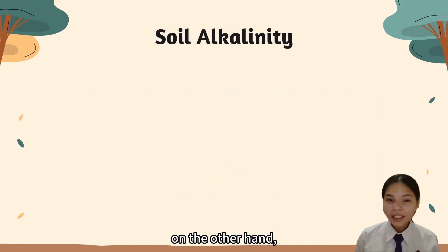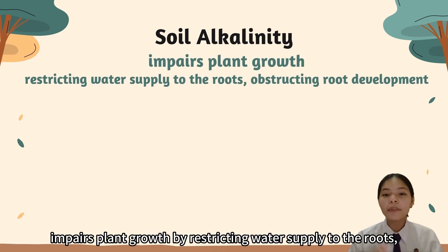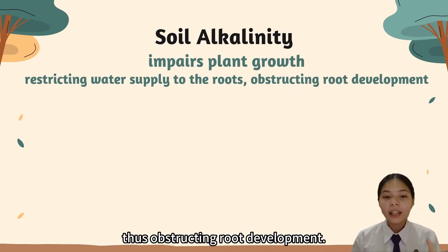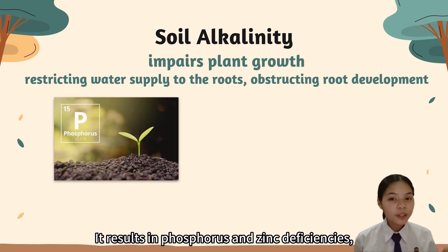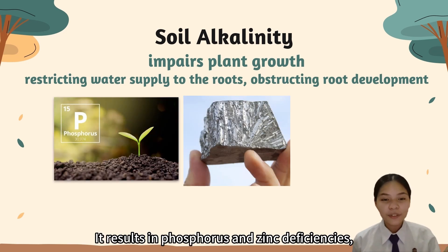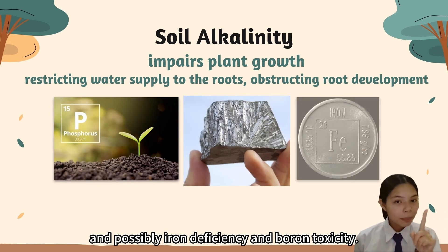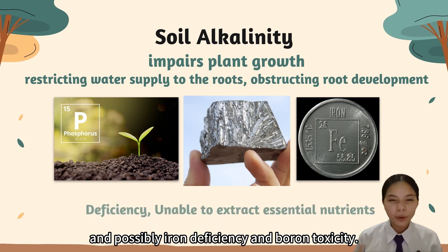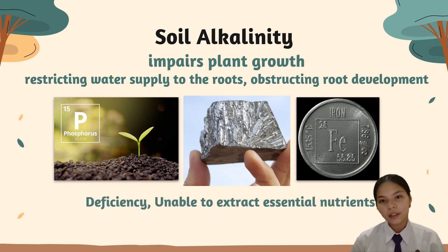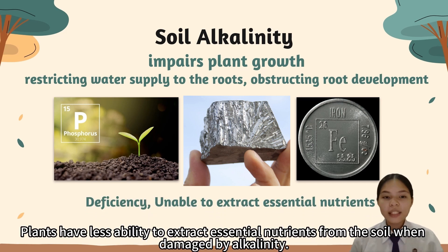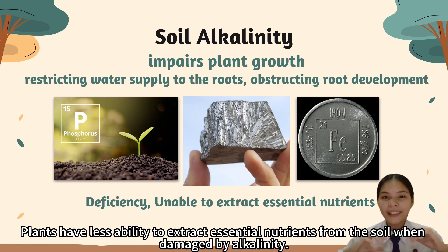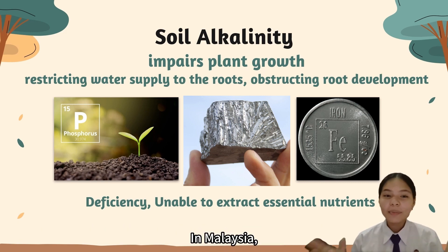Soil alkalinity, on the other hand, impairs plant growth by restricting water supply to the roots, thus obstructing root development. It results in phosphorus and zinc deficiencies, and possibly iron deficiency and boron toxicity. Plants have less ability to extract essential nutrients from the soil when damaged by alkalinity.